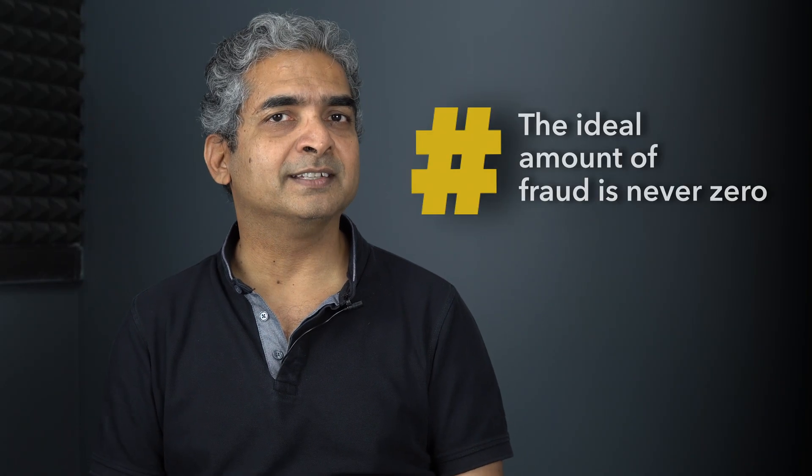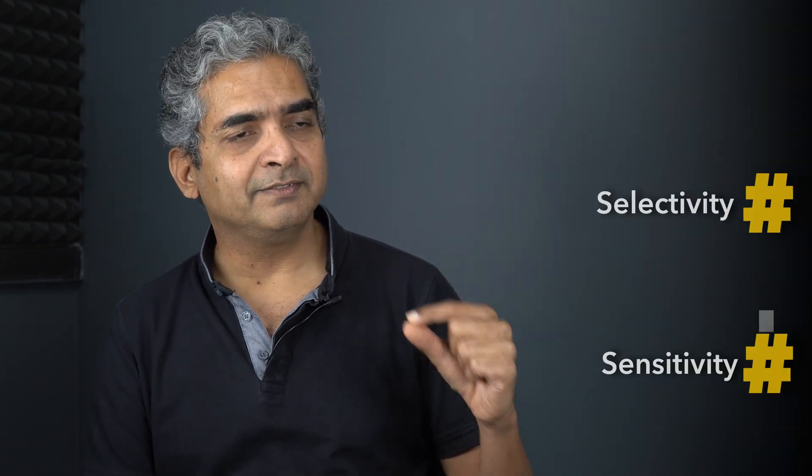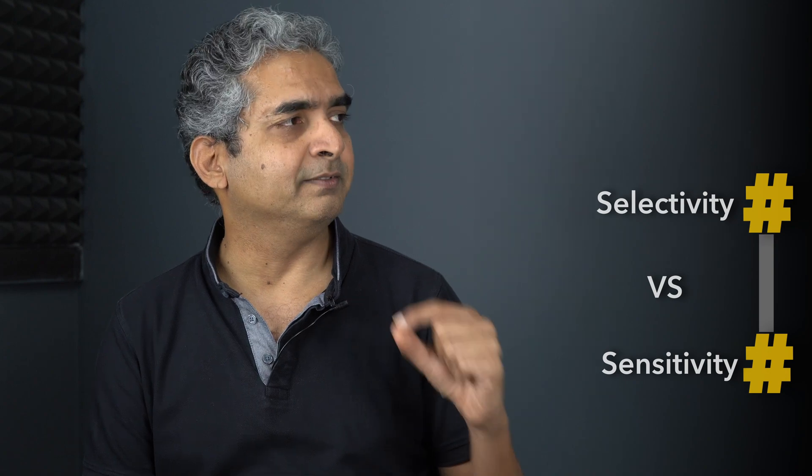The problem is that to reduce fraud, you end up reducing some actual transactions. In any attempt to prevent fraud. And that's why today's episode is that the ideal amount of fraud is never zero. It's non-zero. It's a very counterintuitive statement when you think about it, but it is a very important and highly applicable concept. In the parlance, it is called sensitivity versus selectivity.